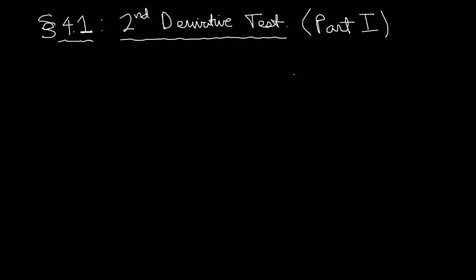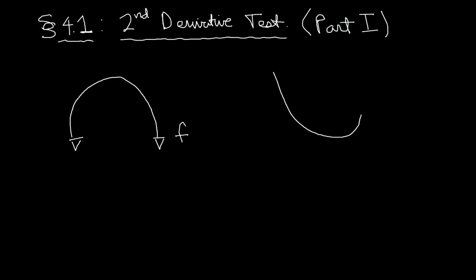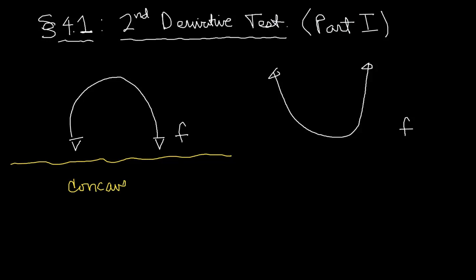So let's start with the first part — what's the idea behind the second derivative test? How are we going to use the second derivative to tell us whether we have a peak or a trough? It's really simple. All you really have to do is look at these two pictures. Let's say that this is one part of the function f, and here's another part of the function f. Obviously, this one is concave down and this one is concave up.